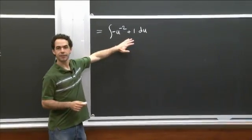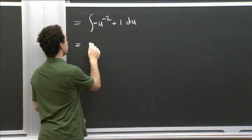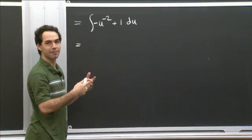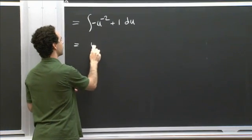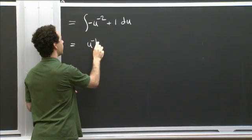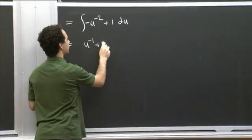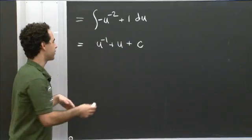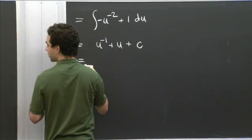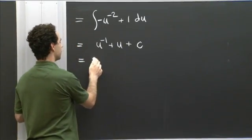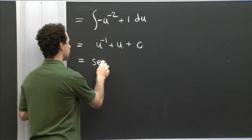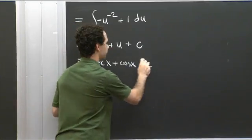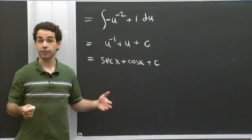OK, and now this is easy to finish from here. This is equal to, well, OK, so minus 2, so we have to go up 1 to minus 1. So that's just u to the minus 1 plus 1 gives us a u plus a constant. And then, of course, we have to substitute back in. So this is u is cosine x. So u to the minus 1 is secant x plus cosine x plus a constant. So that's the first one.